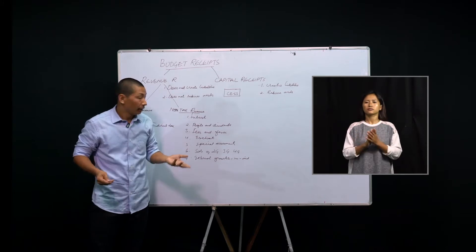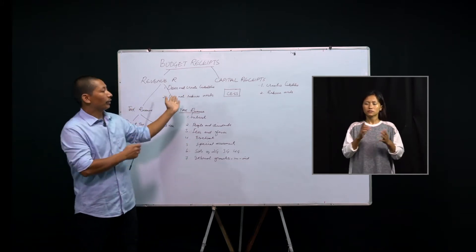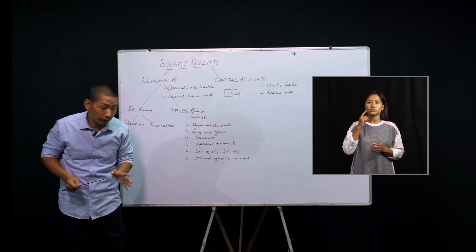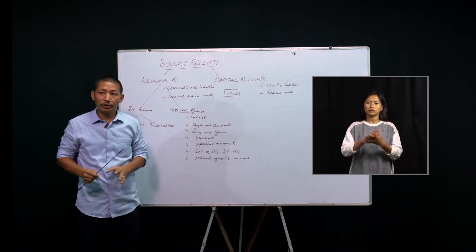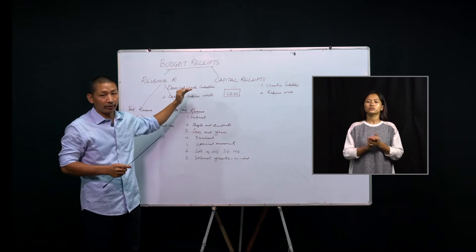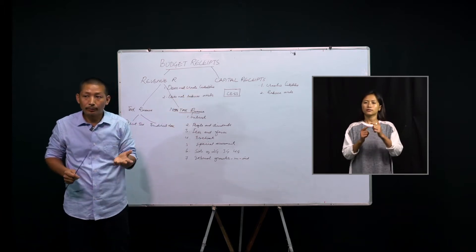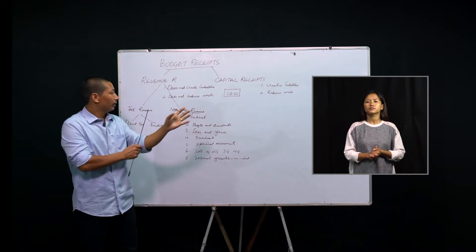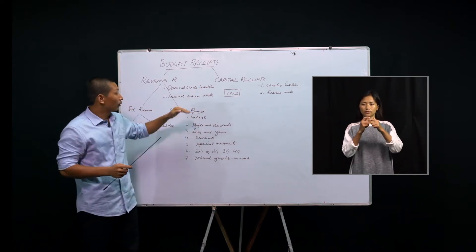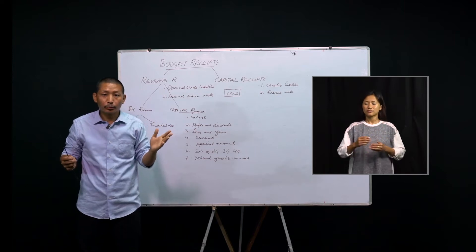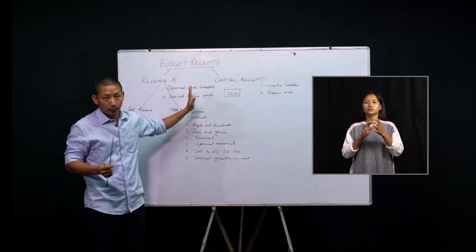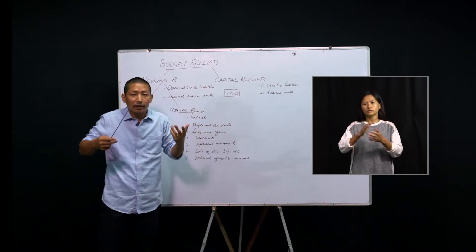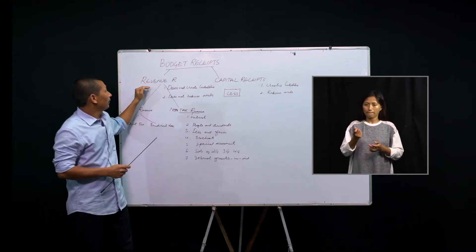So, how does the government generate such revenue? It can be from the proceeds of taxation. Taxation is one of the most important sources of government's revenue. The government generates a lot of income through taxation. When the government receives taxation from the people, they don't create any liability — no burden is created. At the same time, when government gets taxation from the people, they are also not reducing the assets of the government. So, no creation of liabilities and no reduction of assets — they are simply generating revenue. That will come under revenue receipts.